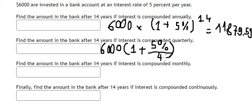And for the exponent, we have 14 multiplied by 4 because every 1 year has 4 quarterly periods. That's why we need to multiply by 4.